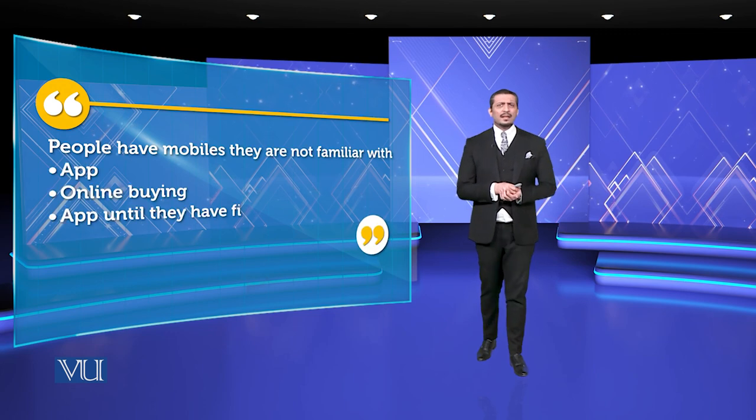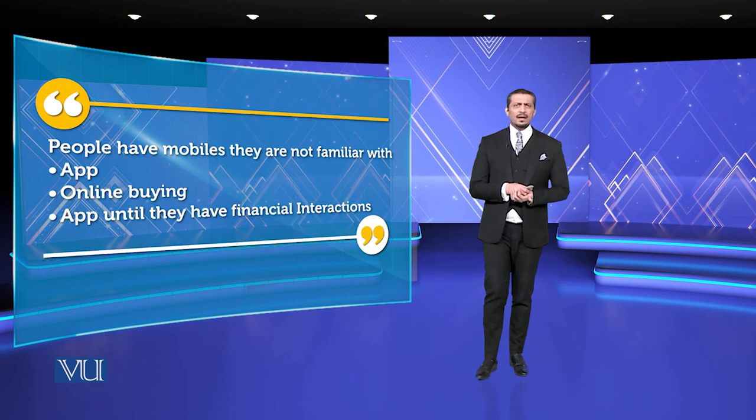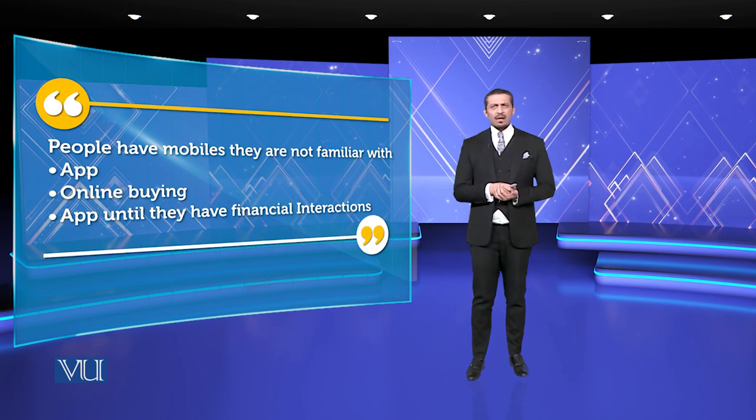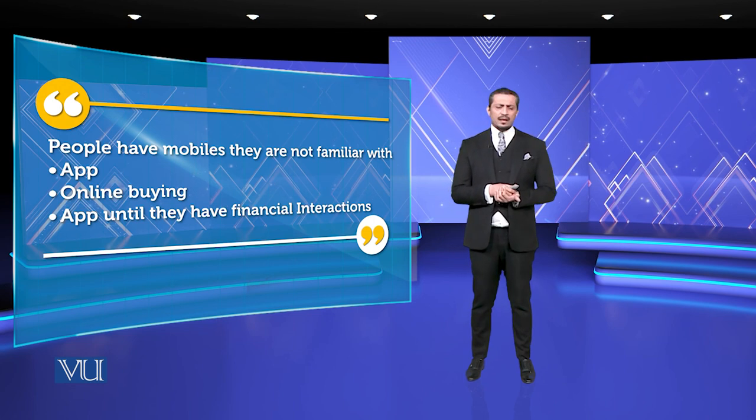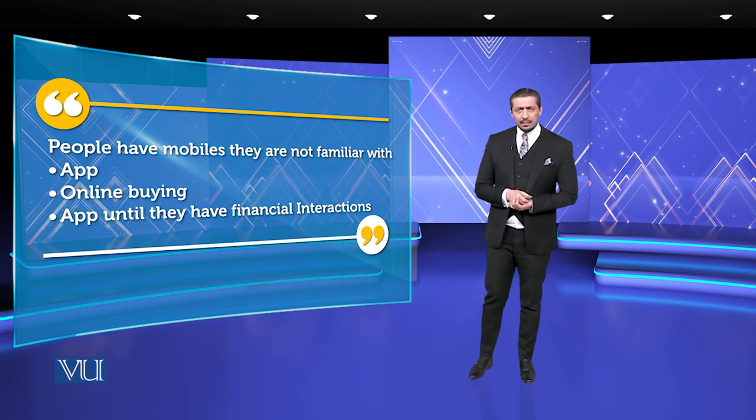What sort of information constraint could there be? I innovate something, I develop an idea, but the acceptability by the audience is the real constraint. For example, people have mobiles but they are not familiar with apps, or not familiar with online buying.